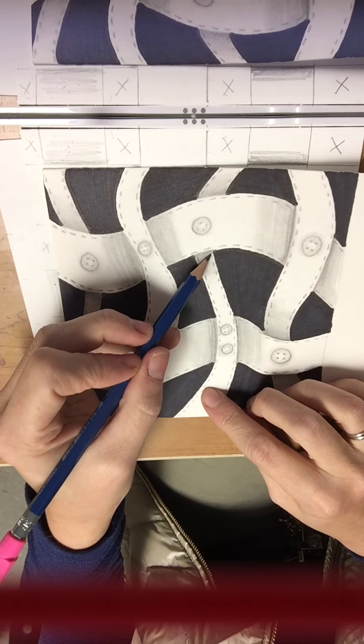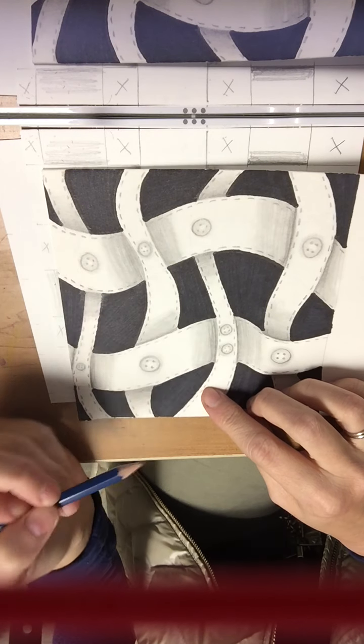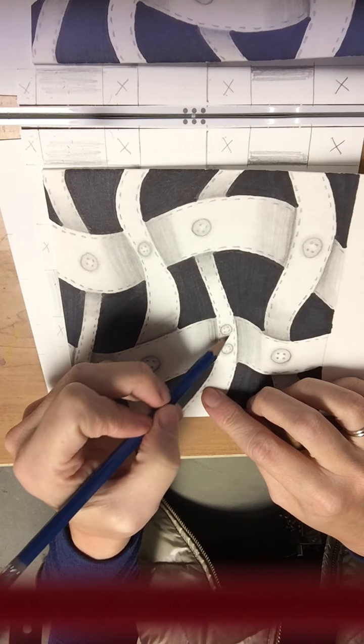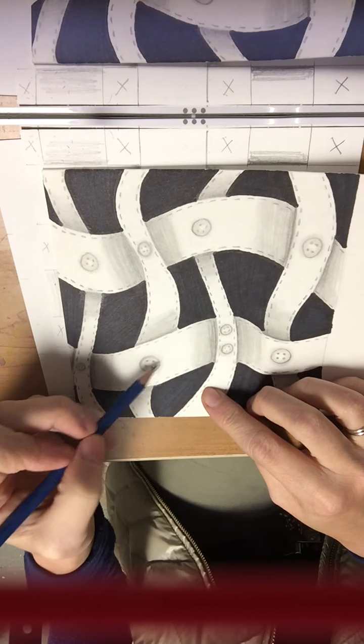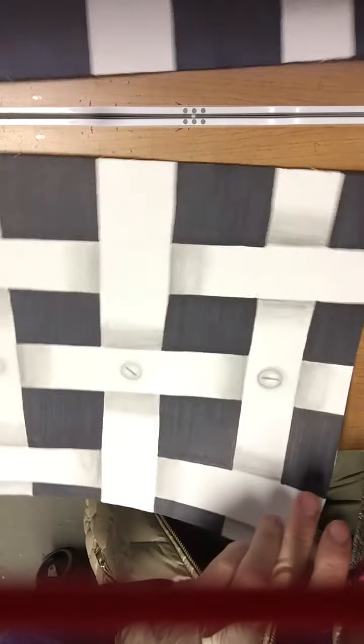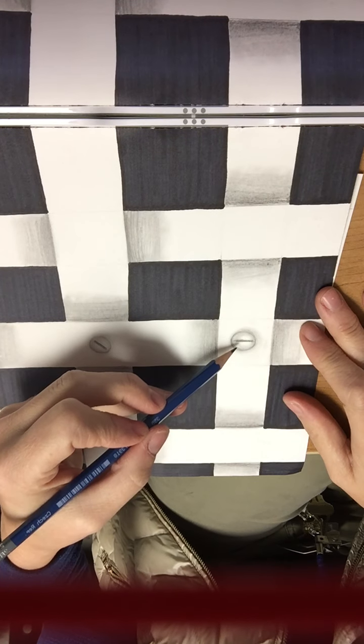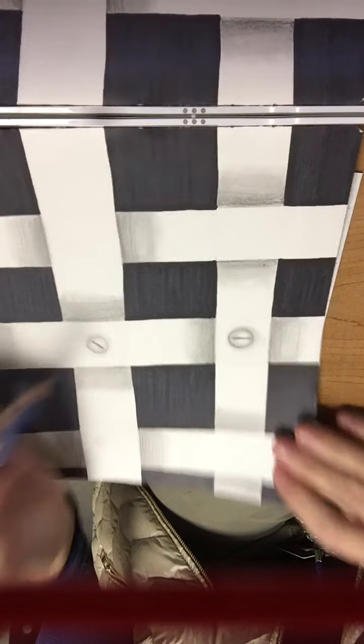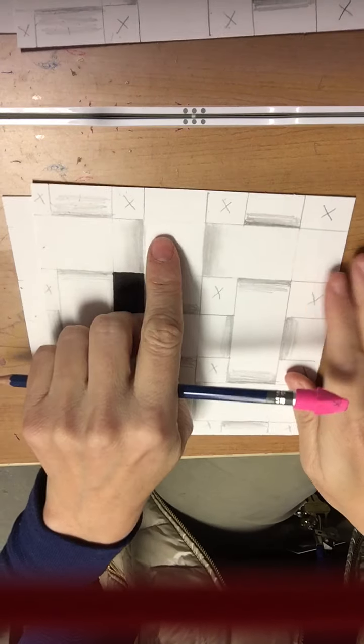And then last but not least, if you would like to make it look more like ribbon, you're welcome to add the little dashed line so it looks like you've sewn it. You can add buttons onto them if you would like to. If you would prefer, you can make it look more industrial and add metal screws.